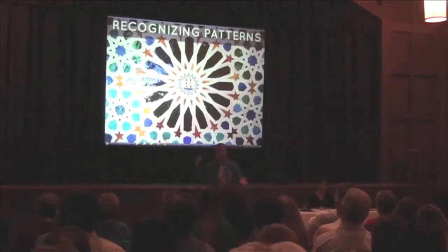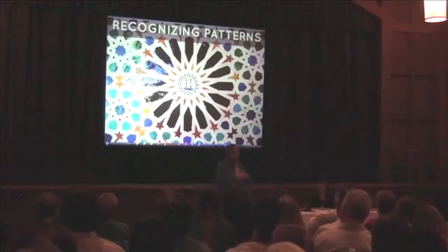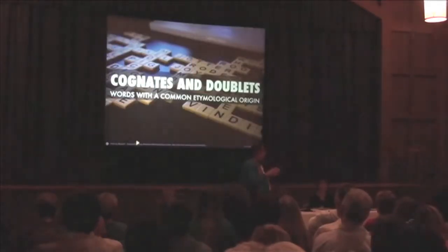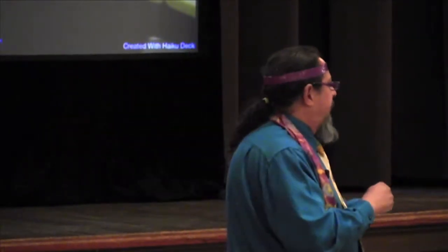Human nature is to recognize patterns, but we have to be careful about not overgeneralizing — our students do that, and we do that all the time too. One way in which we do that is when we think about cognates and doublets. These are words that have common etymological origin. Cognates are from different languages; doublets are inside the same language.